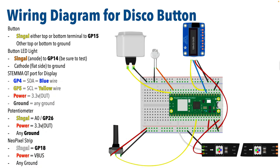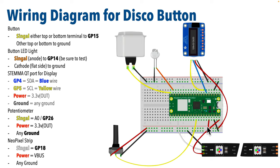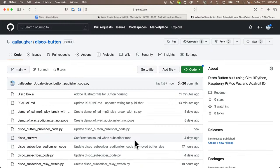The display is connected using StemmaQT with four wires. The standard wiring for the Pico is: blue — the SDA or data wire — goes to GP4; yellow — the SCL or clock wire — goes to GP5; the red power wire goes to 3.3V out, not VBUS; and ground can go to any ground. The potentiometer is an analog device — I'm using pin A0, which is also GP26. Make sure you use 3.3V out for power; the potentiometer should not go to VBUS. Finally, the NeoPixel strip signal goes to GP18, power connects to VBUS, and ground to any ground pin.